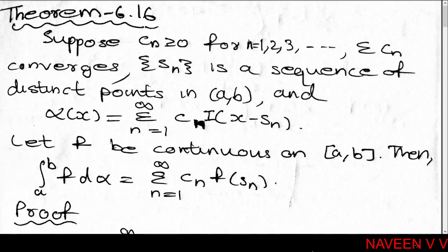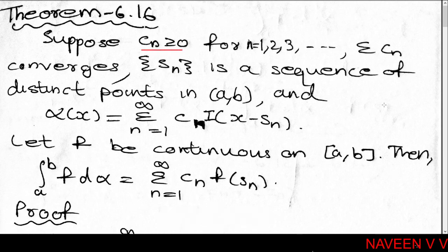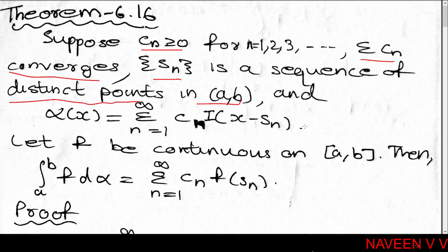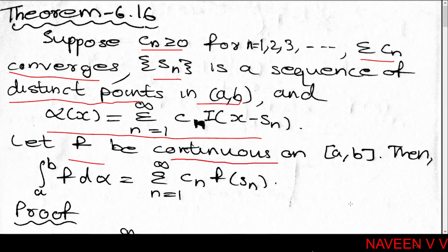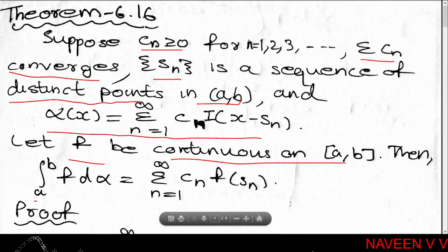Theorem 6.16: Suppose cₙ ≥ 0 for n = 1, 2, 3, ... and the summation Σcₙ converges. Let {sₙ} be a sequence of distinct points in the open interval (a,b), and let α(x) = Σ(n=1 to ∞) cₙ · I(x - sₙ). Let f be continuous on the closed interval [a,b]. Then the integral ∫(a to b) f dα = Σ(n=1 to ∞) cₙ · f(sₙ).